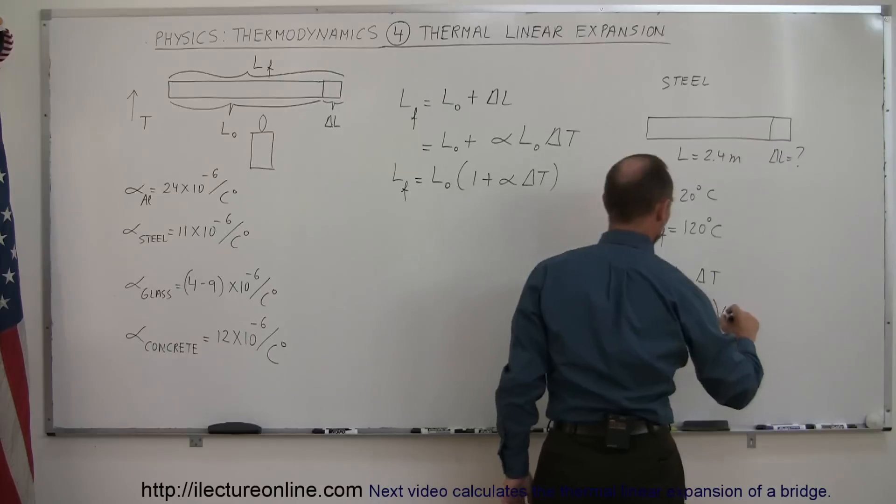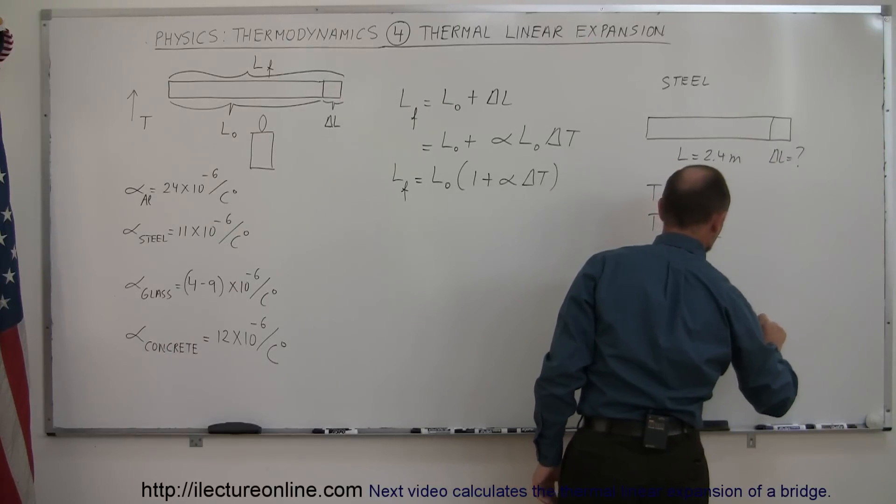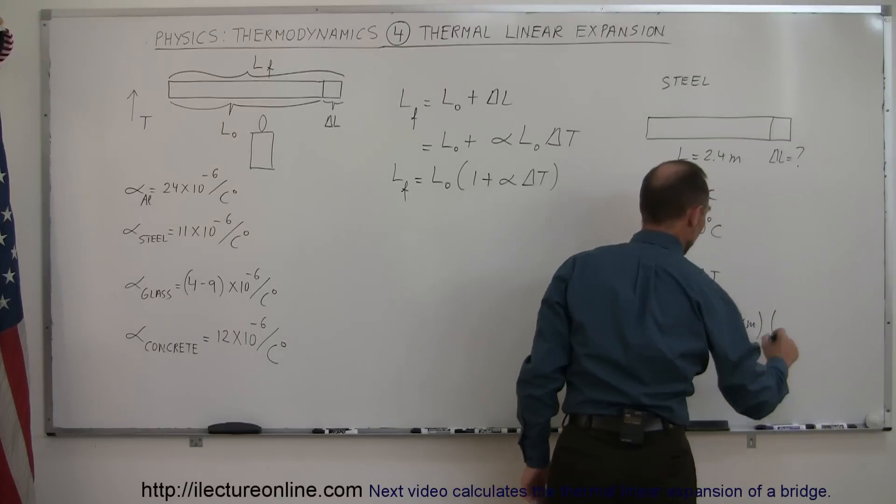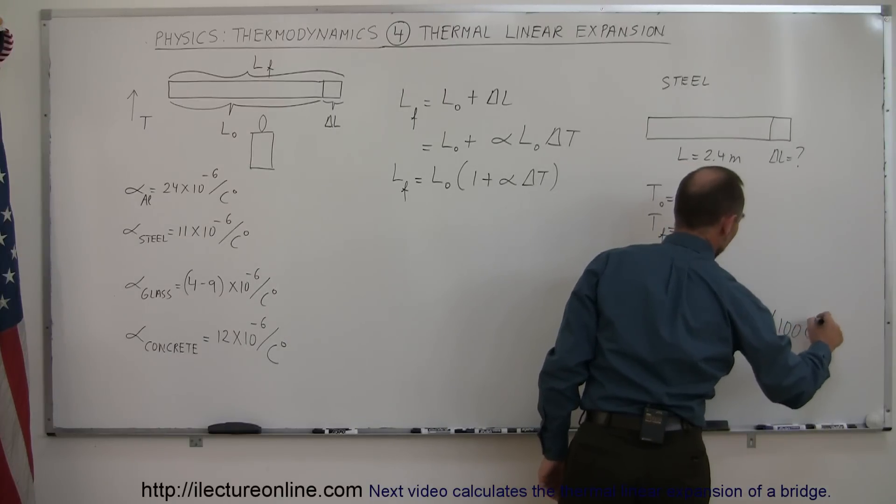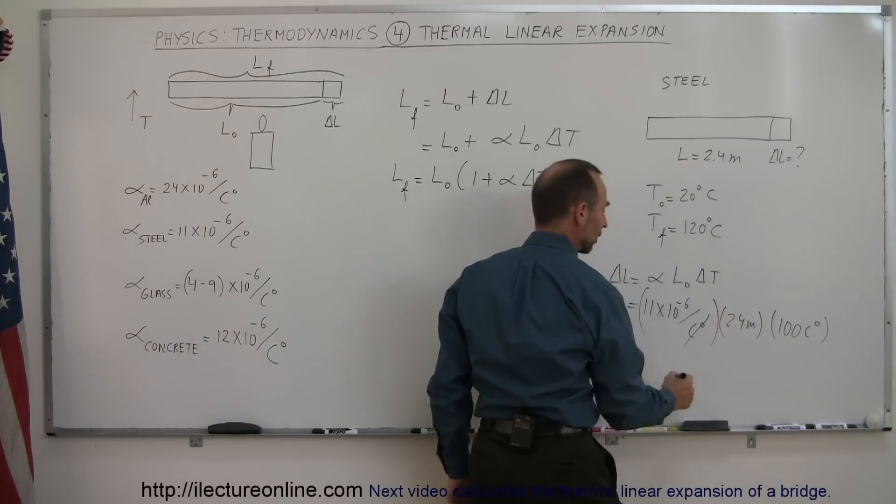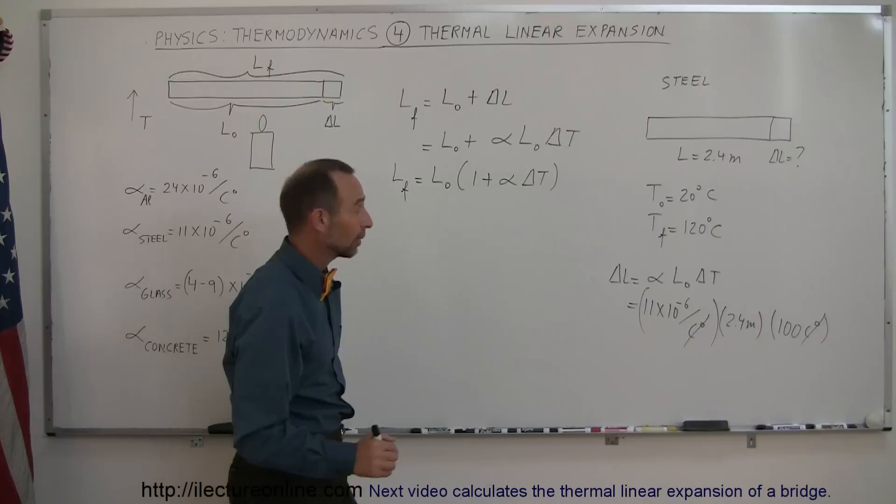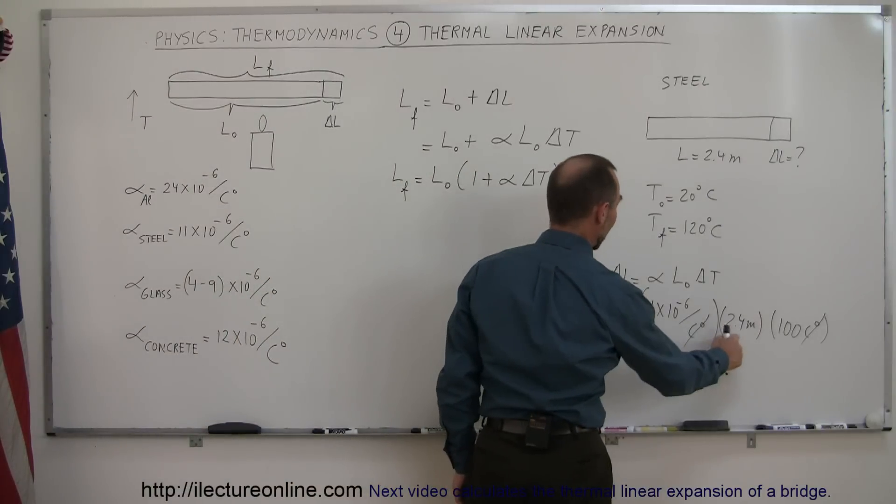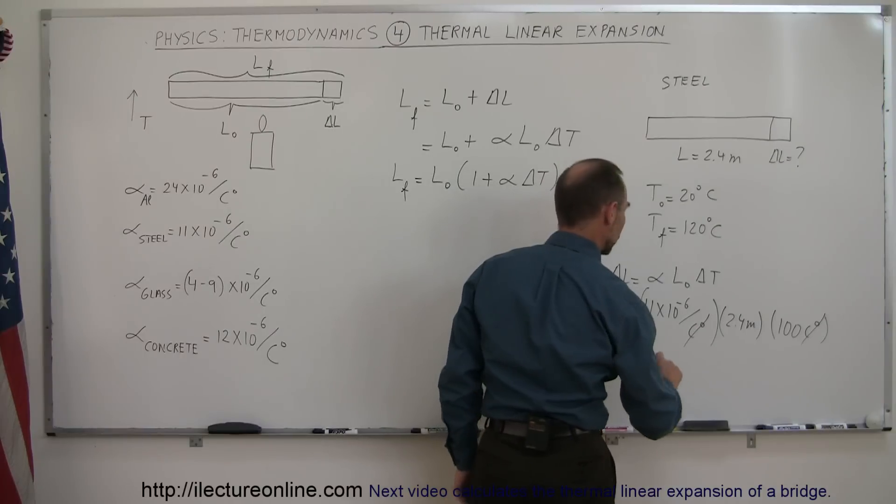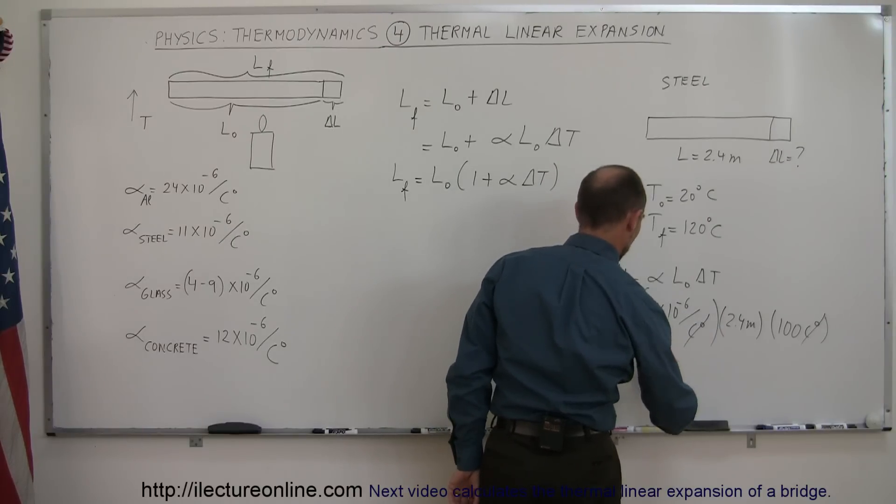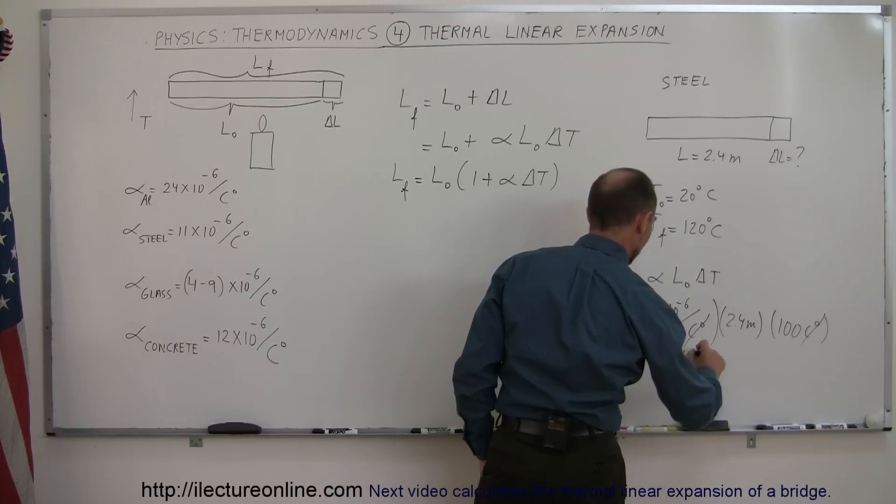The initial length we set was 2.4 meters and the change in the temperature was 100 Celsius degrees. Notice that the Celsius degrees here cancels out with the Celsius degrees there, and all I have to do is multiply those together. Now 2.4 times 11, that would be equal to, that's 24 and 6 here, that would be 26.4 times 10 to the minus 6, and that would be meters.